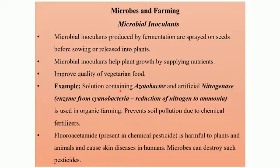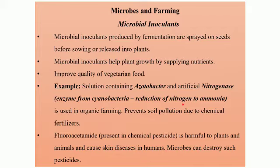Nitrogen is a basic requirement for plant growth, but the plant cannot take up the nitrogen present in the air directly. So these bacteria convert nitrogen into a nitrogen compound, that is ammonia, and then it is used up by the plants from the soil. We also have artificial nitrogenase. Nitrogenase is an enzyme obtained from a bacteria called cyanobacteria, and the function of this enzyme is to convert nitrogen into ammonia — that is, to bring about the reduction of nitrogen to ammonia.